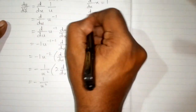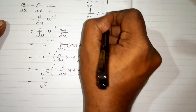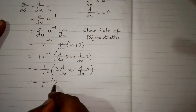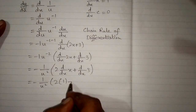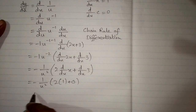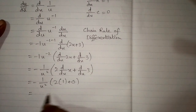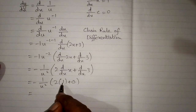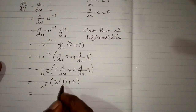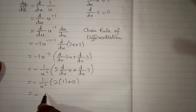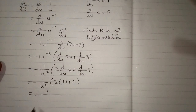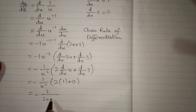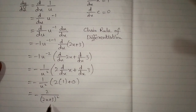And the derivative of any constant is 0. So here we will write 1 and here we will write 0. Now 2 times 1 is 2, and 2 plus 0 is again 2, and 2 multiplied by 1 is 2. So we have minus 2 upon u squared. Now we will put the value of u which is 2x plus 3. So the final answer is minus 2 upon (2x plus 3) whole squared.